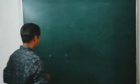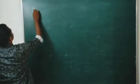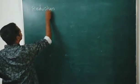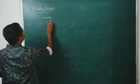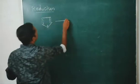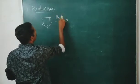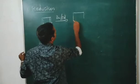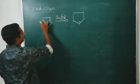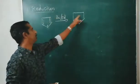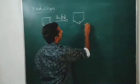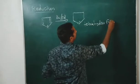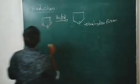Chemical properties — reactions of furan. First reaction: reduction. When furan is reduced with hydrogen in the presence of palladium, the double bonds are reduced and we get tetrahydrofuran.